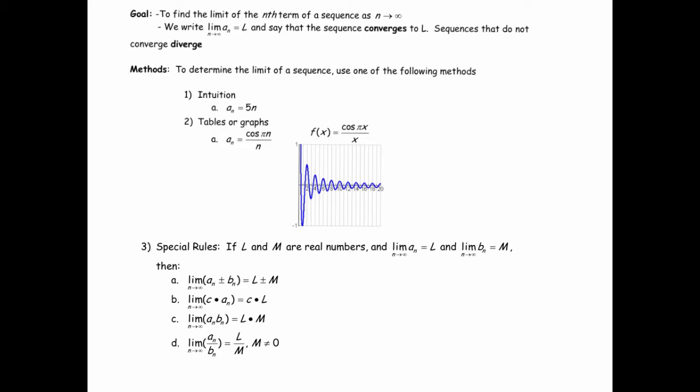The methods we'll use: one would just be intuition. You don't need a whole lot of theorems to understand what's happening to sequences in many cases. For instance, the sequence defined by 5n: what's the limit as n goes to infinity of 5n? As n gets bigger and bigger, the values get bigger and bigger, so this is just going to be infinity. We'd say the sequence diverges.